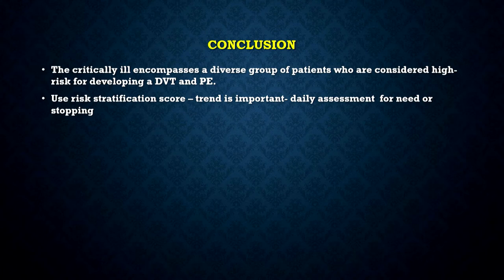To conclude for DVT prophylaxis in ICU: critically ill patients encompass a diverse group who are considered high risk for developing DVT-PE. The fact that they are in the ICU means something is wrong with them — they are more likely to be immobilized, requiring interventions, procedures, and surgeries, so they are at high risk. Use a good risk stratification score and the trend is very important. A low score in the morning may be different by evening or post-operatively. Keep a watch, do a daily assessment to decide about giving or stopping thromboprophylaxis.